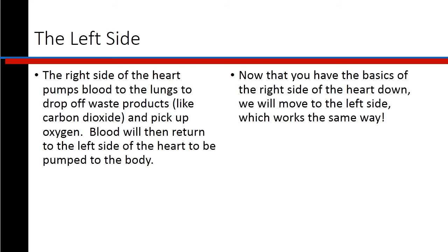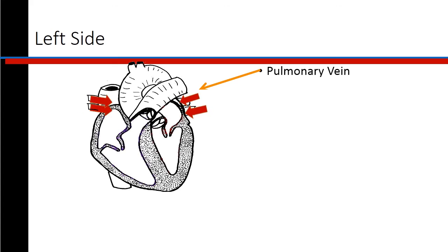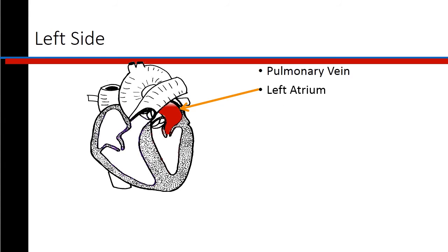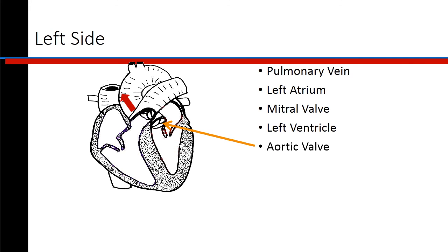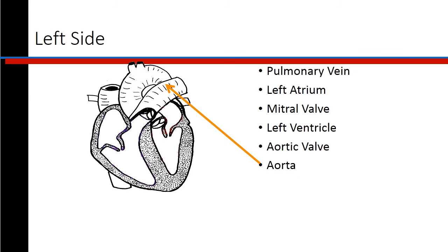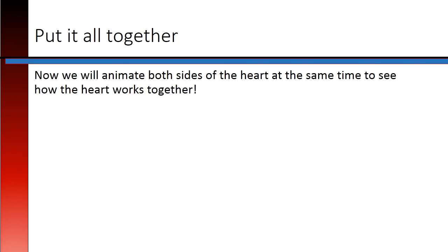Now that you have the basics of the right side of the heart, we'll move to the left side, which works the same way. Blood is transported to the left side through the pulmonary veins and deposited into the left atrium. The mitral valve opens and allows blood to progress into the left ventricle. When the left ventricle contracts, the aortic valve opens and the blood progresses to the aorta.